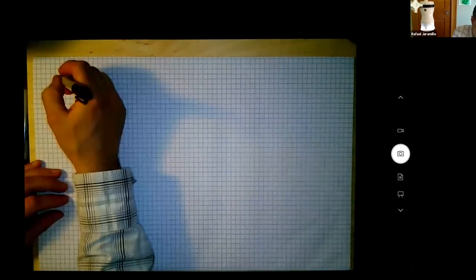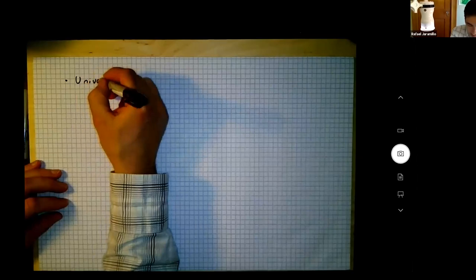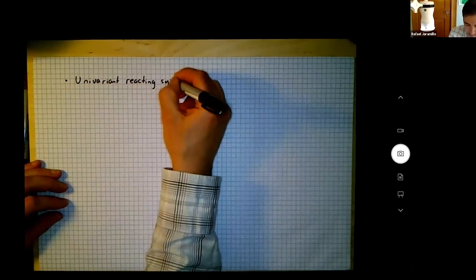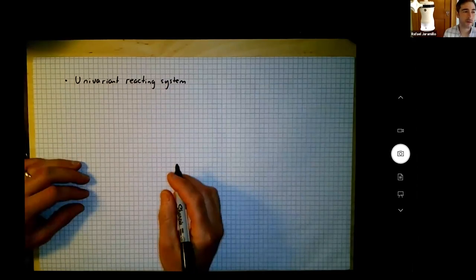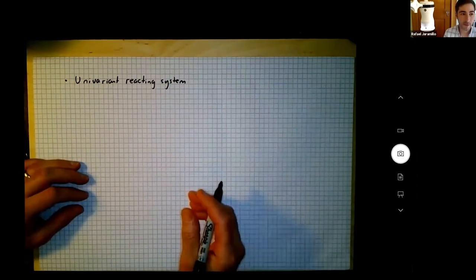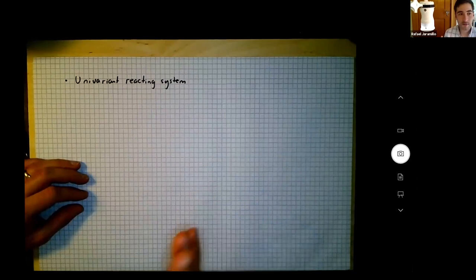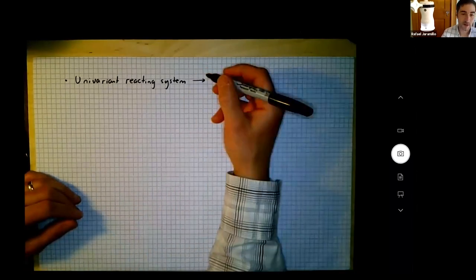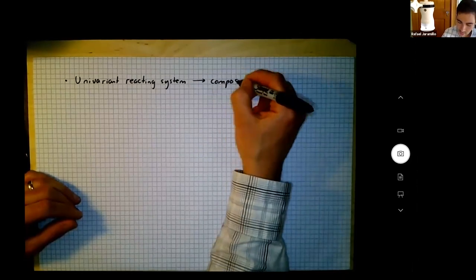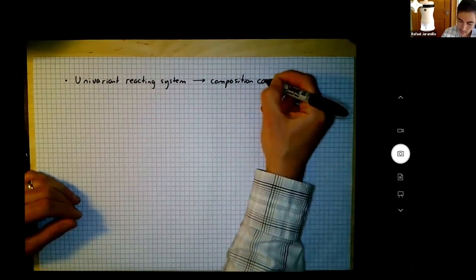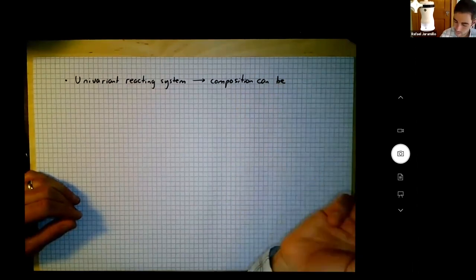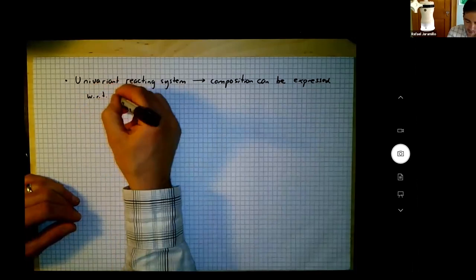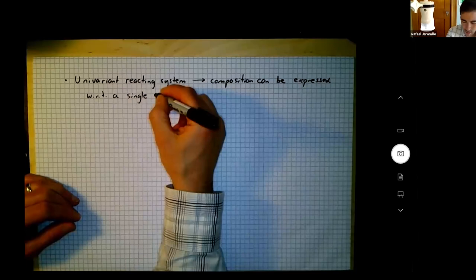For a univariant reacting system — univariant means there's only one variable, a system with only one reaction — the reaction can run to the right or run to the left. There's only one reaction coordinate. We saw this in almost all of the examples that we did. The composition expression can be expressed with respect to a single variable.